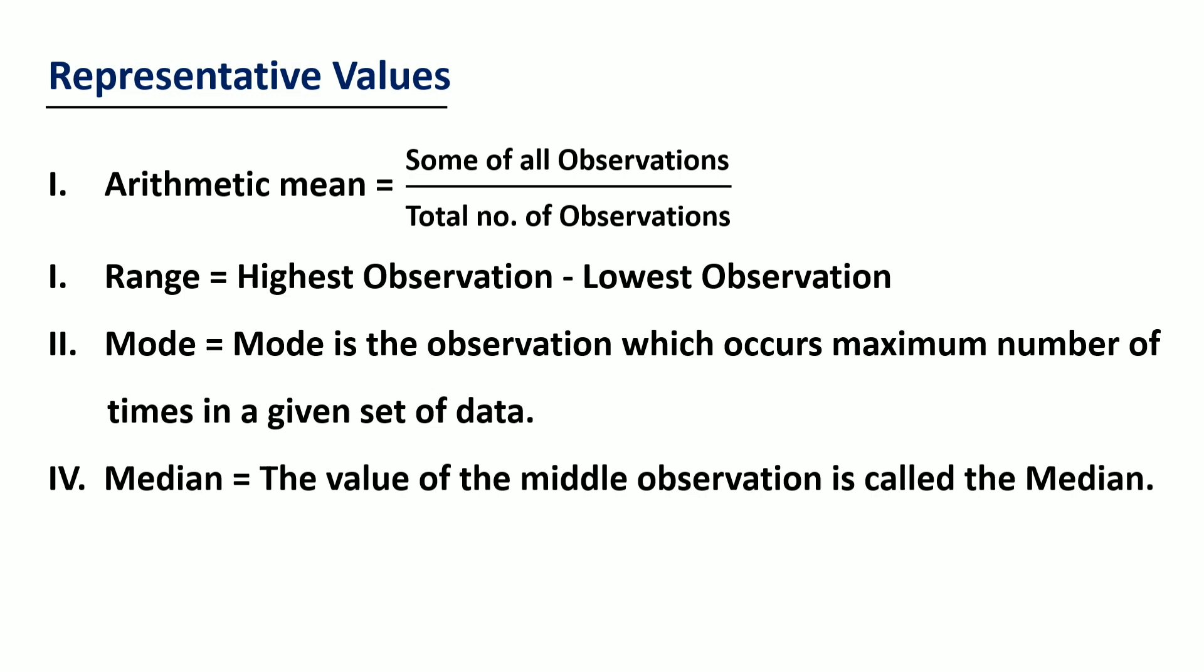First is arithmetic mean. Arithmetic mean equals sum of all observations divided by total number of observations. The arithmetic mean is commonly known as average. Remember that arithmetic mean lies between the highest and the lowest observation.